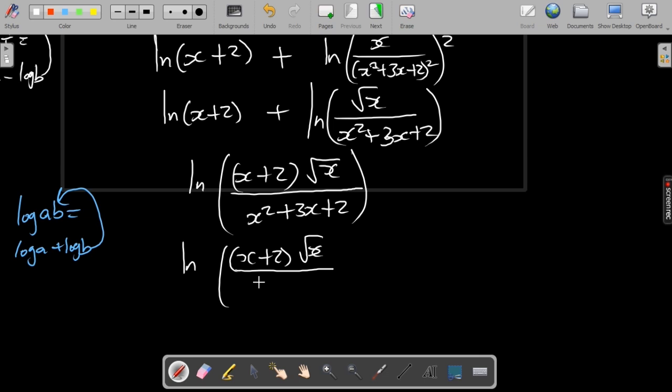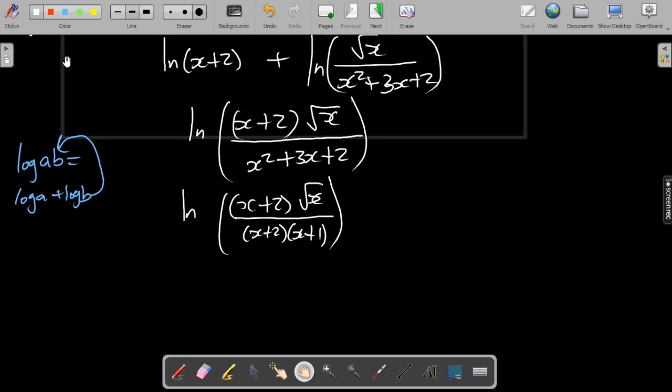We can simplify this because at the bottom here we can factorize this to the following. If you factorize the bottom part you should get x plus 2, x plus 1. You should always aim to simplify if you can. In this case we can because we have an x plus 2 at the bottom and at the top, so you can cancel them. In the end we just have ln of square root of x over x plus 1.